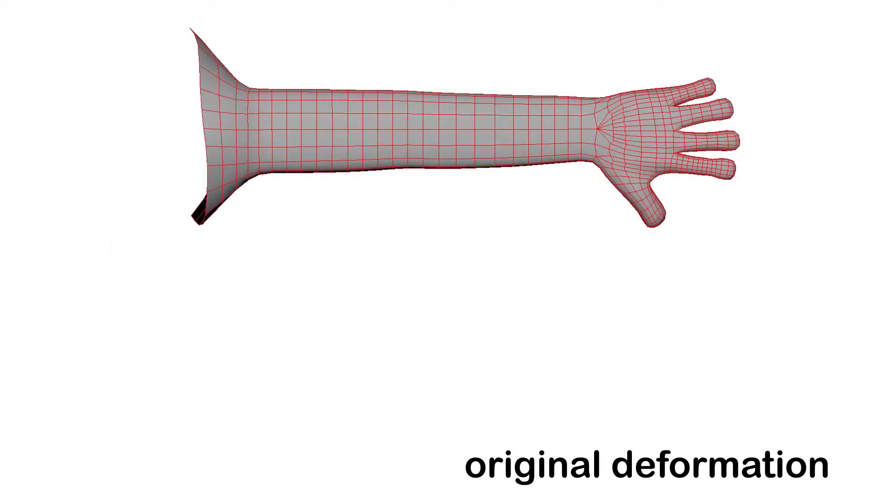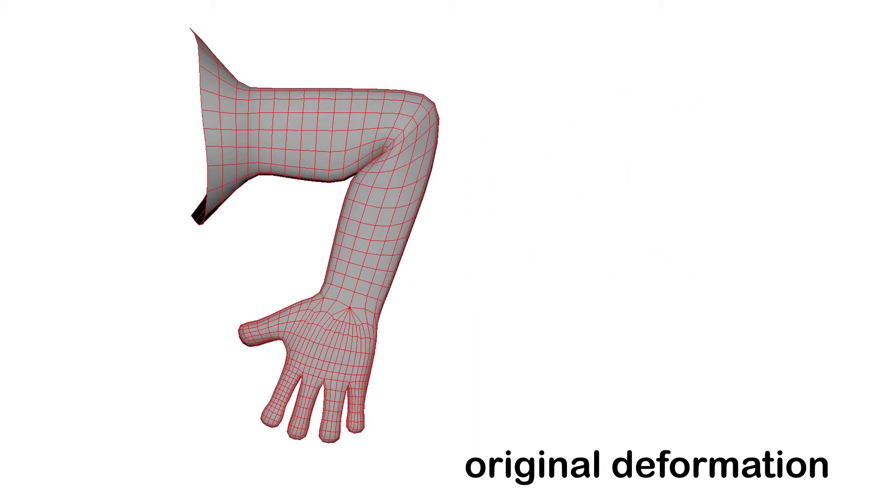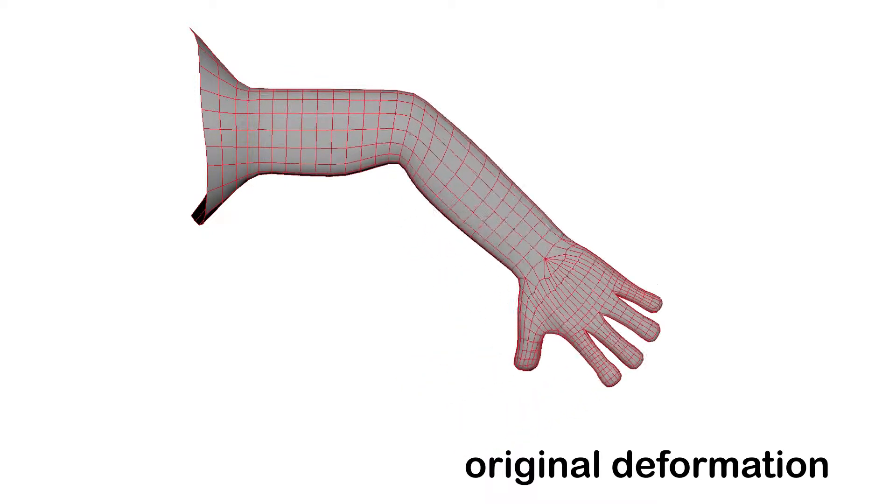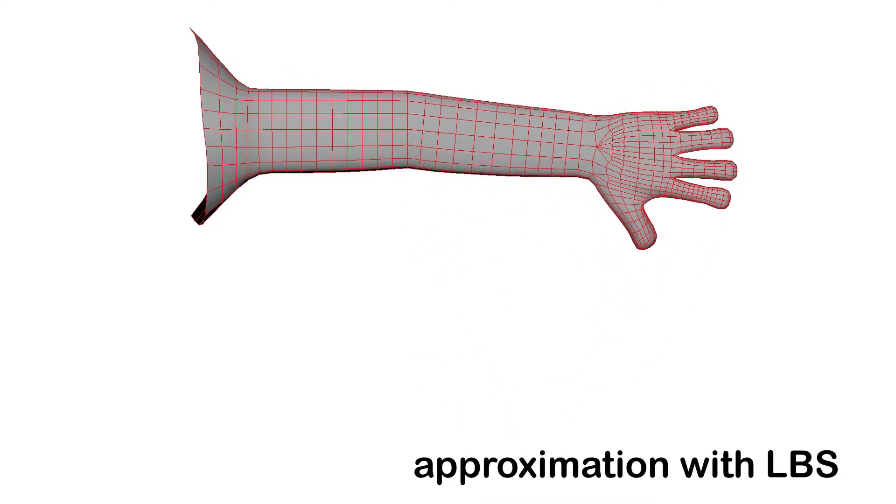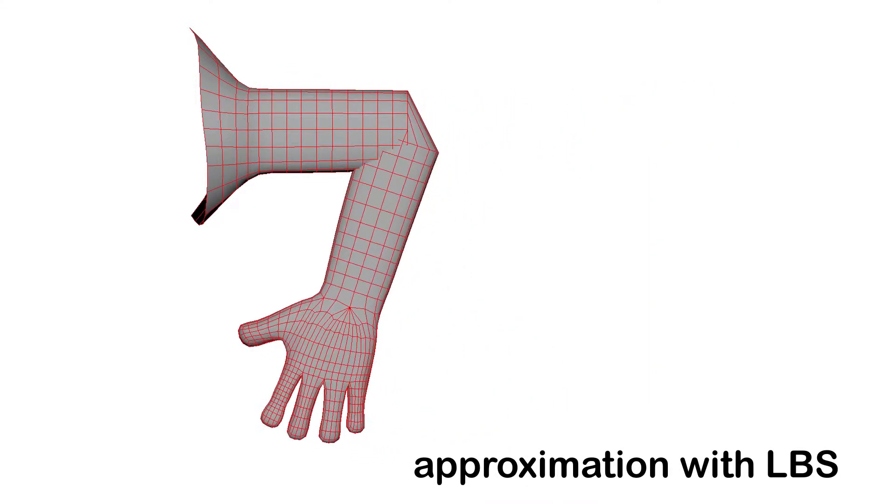In this example, we explain how our method can approximate the mesh deformations of this arm. We first use the underlying bones and joints to approximate the deformation using linear blend skinning with each vertex assigned to a single bone.